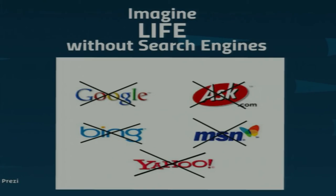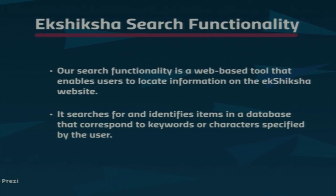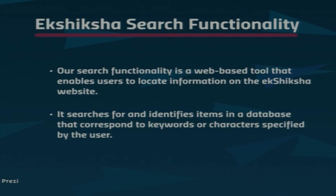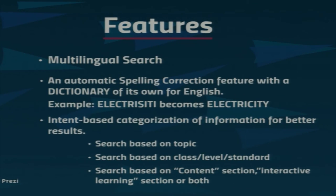Think about a site with a huge amount of information but no search functionality — how inconvenient would it be to find something without knowing its location? This is why we recognized the importance of search functionality. Our search functionality is a web-based tool that allows users to locate information on the Ikshiksha website. It searches and identifies items in a database that correspond to the keywords and characters provided by the user, allowing them to intuitively interact with the website.